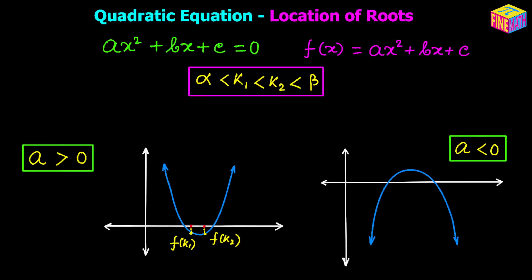I have denoted the two points with two red dots. The diagram is small, but please assume the first red dot on the positive x-axis, inside the parabola, is the point (k1, 0), and the second red dot is the point (k2, 0). In both cases, as long as k1 or k2 are within the parabola, the function value will be negative — the yellow dotted line shows that the value is below the x-axis.